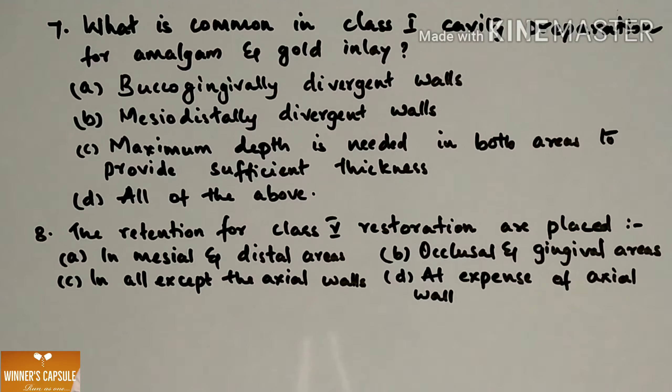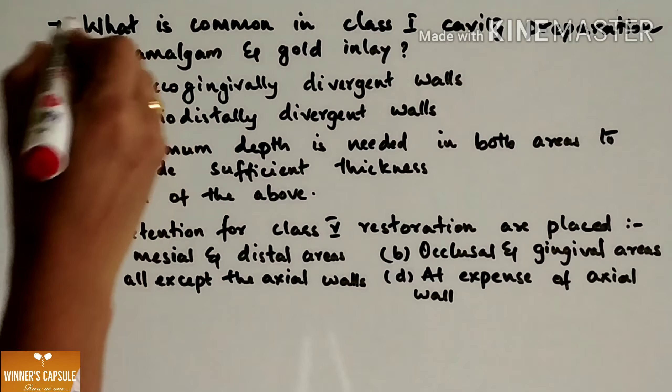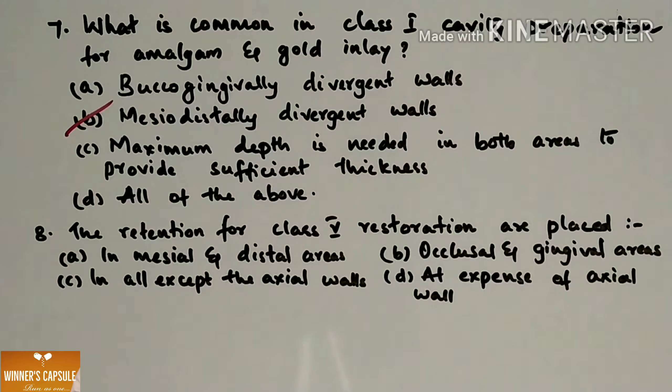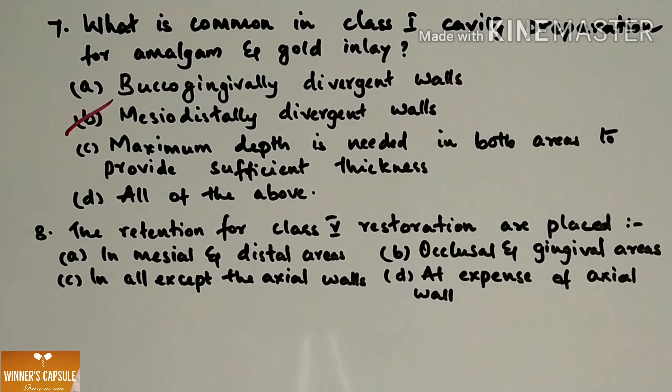Going to next question: What is common in class 1 cavity preparation for amalgam and gold inlay? (a) Buccogingivally divergent walls (b) Mesiodistally divergent walls (c) Maximum depth is needed in both areas to provide sufficient thickness and (d) All of the above. Answer is option B, mesiodistally divergent walls.